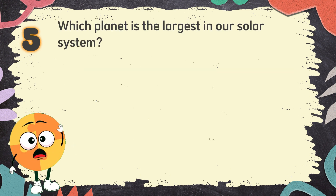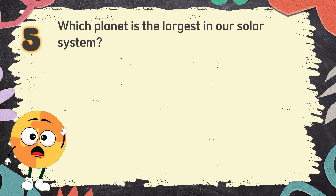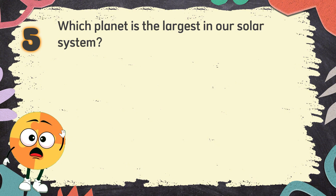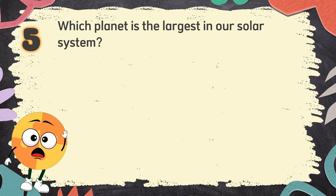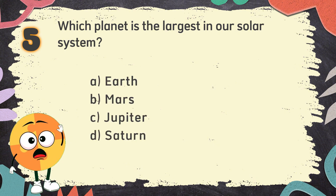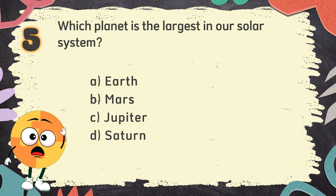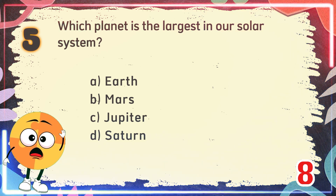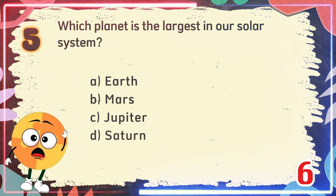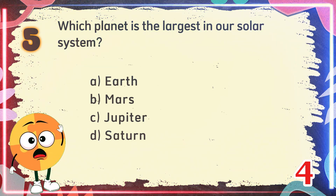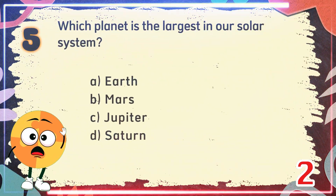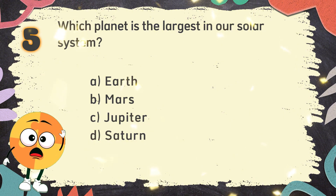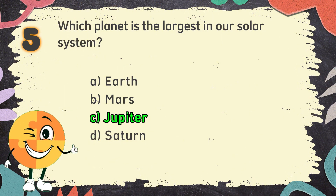Number 5. Which planet is the largest in our solar system? The choices are: A. Earth. B. Mars. C. Jupiter. D. Saturn. The correct answer is C: Jupiter.